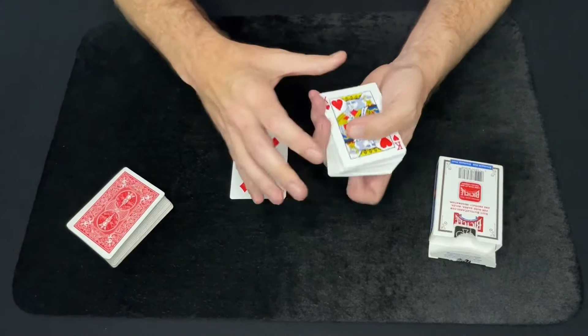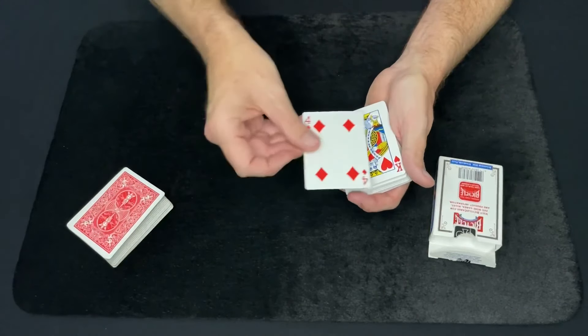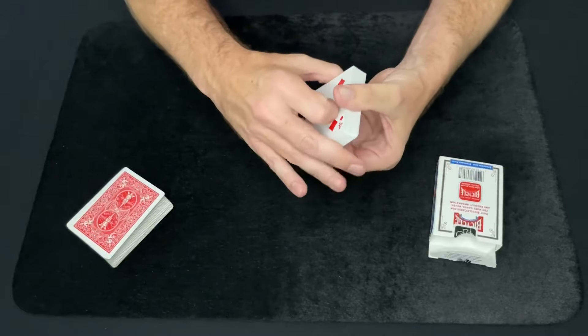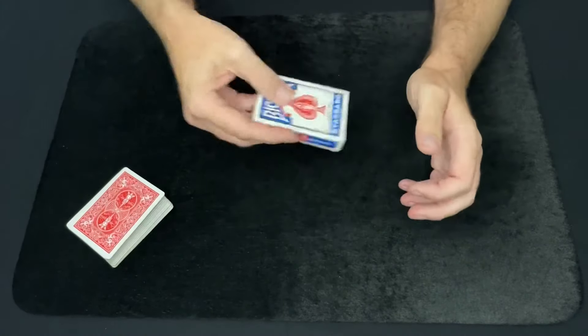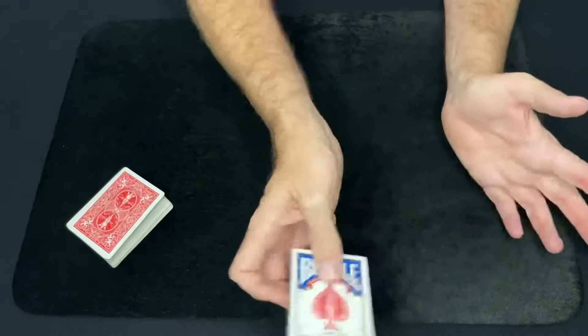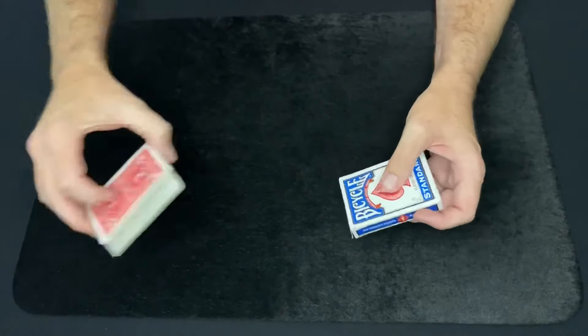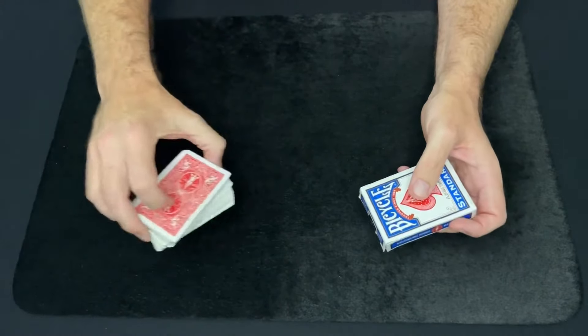Now the reason why I use two decks is because then I can just turn this card over, place this card on the bottom, and then place this box back, the cards back in the box, and get rid of it. Now your gimmick is gone, and you can do card tricks with this regular deck now.